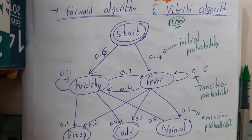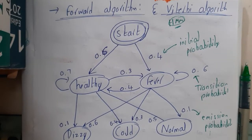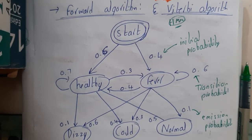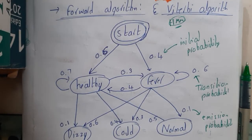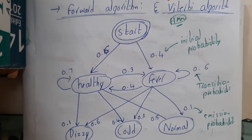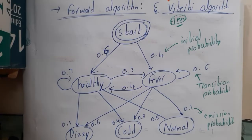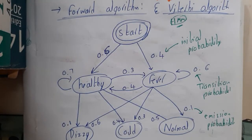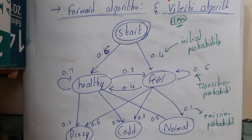Hello guys, we are back with our next lecture. In this lecture let us go through problem solving in the Forward Algorithm and the Viterbi Algorithm — we'll be going through both algorithms because these two are almost similar. These topics come under Hidden Markov Models, which is in Unit 3 or Unit 4 depending on your syllabus.